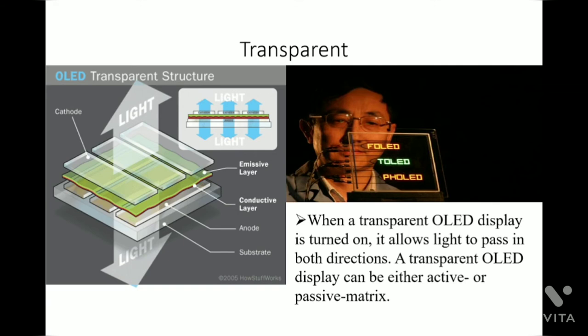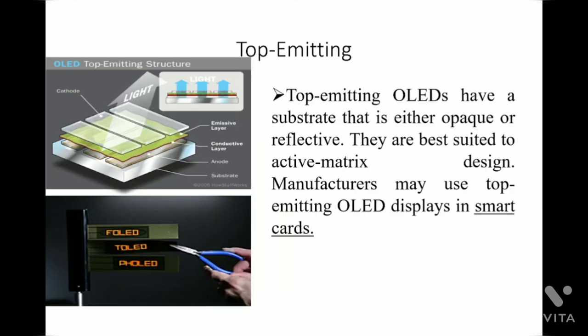Transparent OLEDs: when a transparent OLED display is turned on, it allows light to pass in both directions. A transparent OLED display can be either active or passive matrix. Top emitting OLEDs have a substrate that is either opaque or reflective. They are best suited to active matrix design, and manufacturers may use top emitting OLED displays in smart cards.